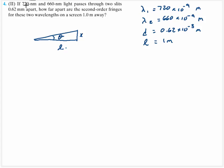Some more practice using double slits. We've got two wavelengths — wavelength 1 and wavelength 2 — going through some slits. I know the slit separation, so I know d. I'm looking for how far apart the second order fringes are. Second order means m is equal to 2. Fringes implies we can see them, so we're looking for constructive interference — the bright ones.